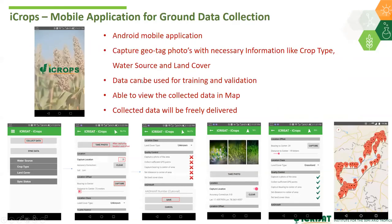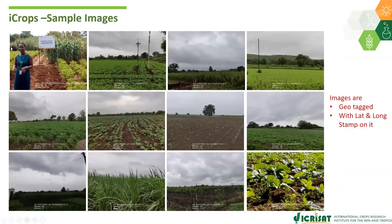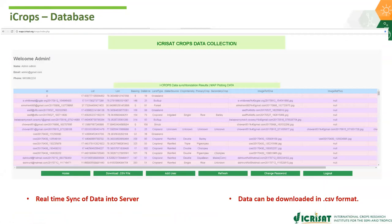For ground data, we developed a mobile application called iCrops — an Android-based app that captures geotagged photographs with important information including major crop type, irrigation source, length of growing periods, primary and secondary crop, and two to three photographs at each location. All data syncs into our server and can be shared with up-to-date time and location information.